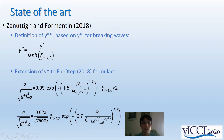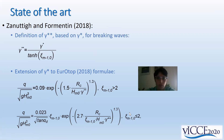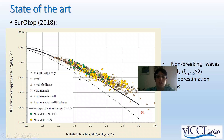Gamma star star consists of the gamma star coefficient divided by tanh(xi). We see that when xi increases — namely becomes greater than two — tanh(xi) goes to one, and so gamma star star coincides with gamma star. The main difference is just for breaking waves, and we directly included this new coefficient in the EurOtop 2018 formula for both breaking and non-breaking waves.